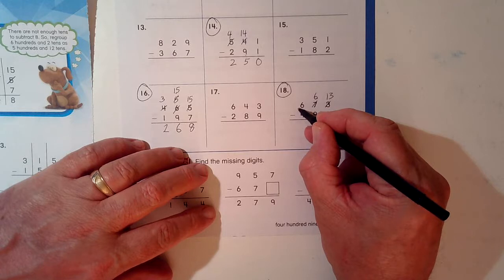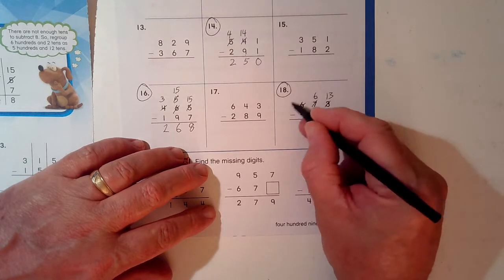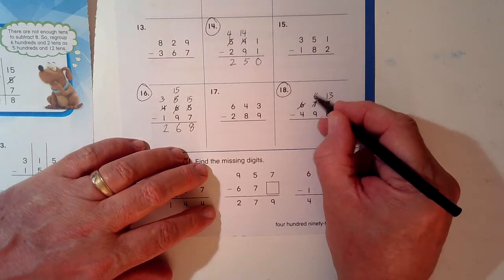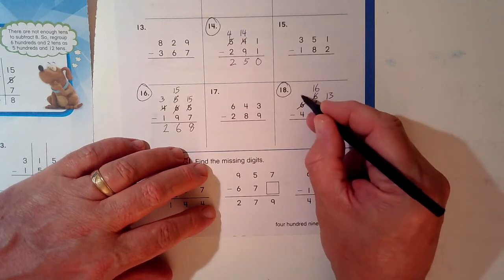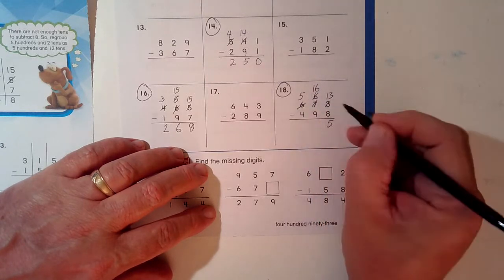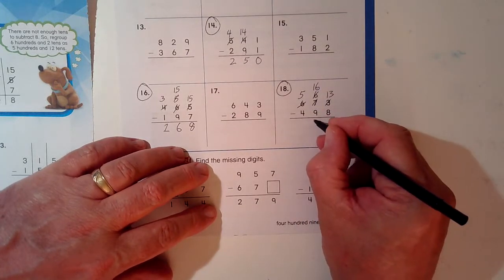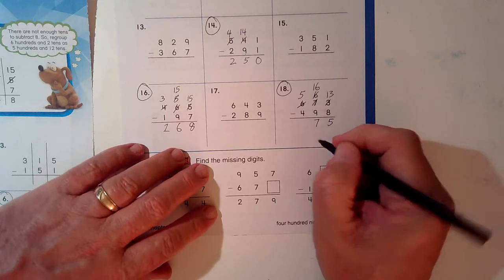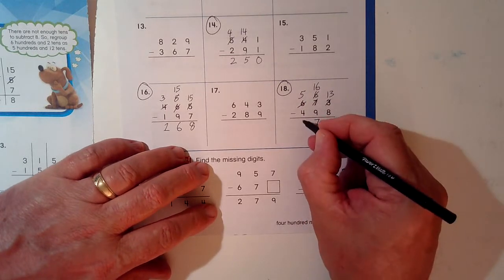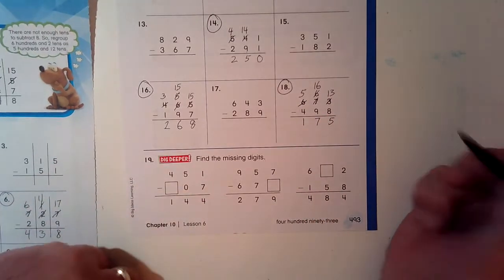So I'm going to take one of these sets of 100. 10 tens. Bring it over here with the 6. Now it's 16. I took one of these, now it's 5. 16, can I take away 9? I sure can. It's 7. And 5 take away 4, it's 1. All right.